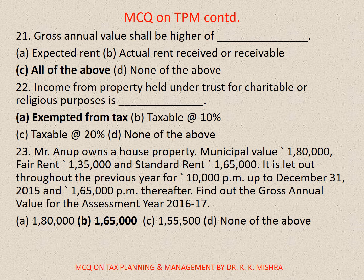Question number 22: Income from property held in trust for charitable or religious purposes is — correct option is A: Exempted from tax. Question number 23: Mr. Anuf owns a house property. Municipal value: 1,80,000; Fair rent: 1,35,000; Standard rent: 1,65,000. It is let out throughout the previous year for 10,000 per month up to December 31, 2015 and 1,65,000 per month thereafter. Find out the gross annual value for assessment year 2016-17. Correct option is B: 1,65,000.